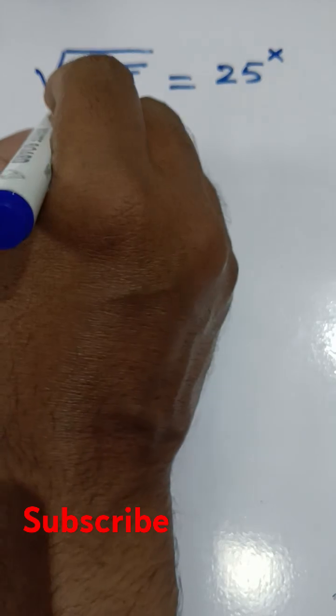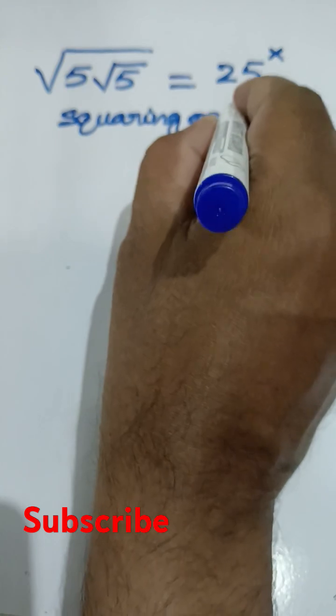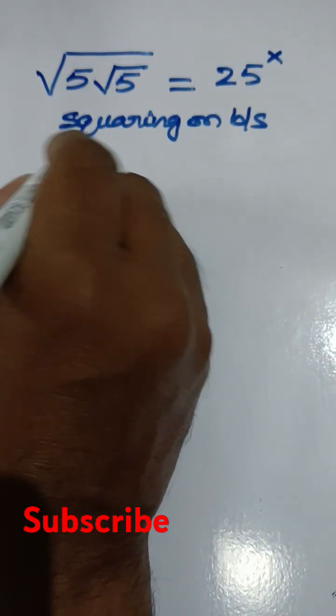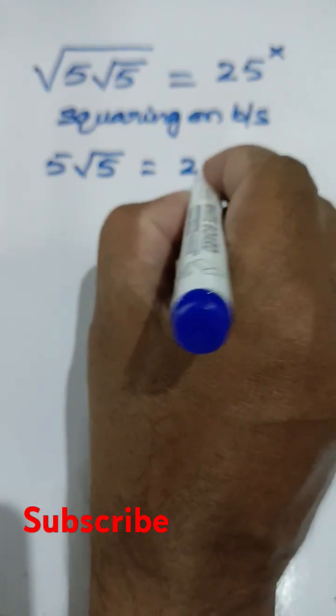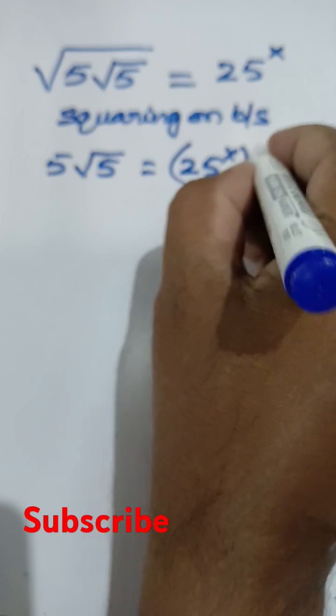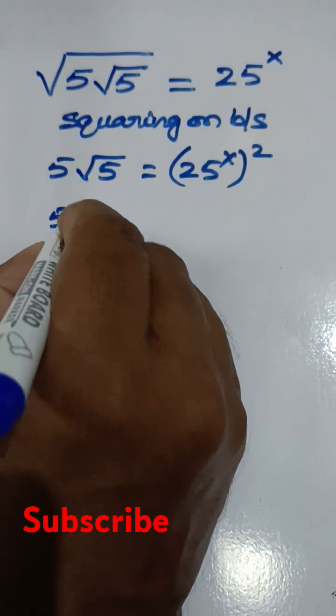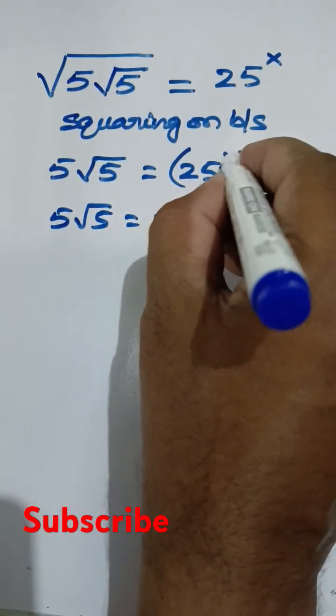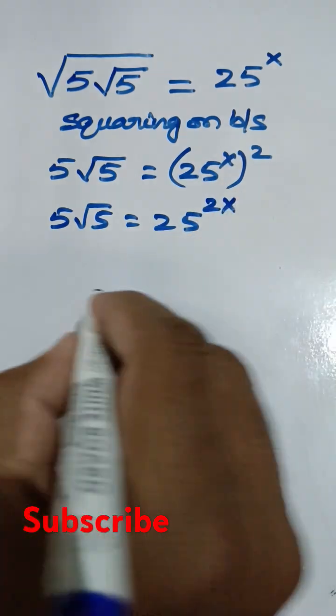Squaring on both sides, we get 5√5 equals 25 to the power of x, whole squared. This is 5√5 equals 25^x to the power of 2, which is 25 to the power of 2x.